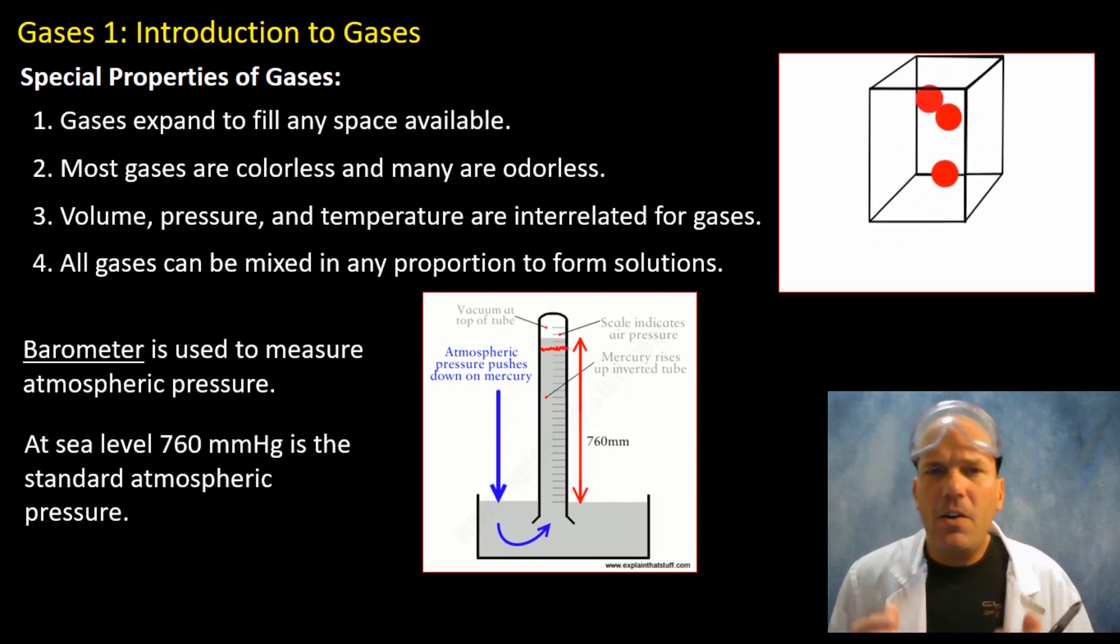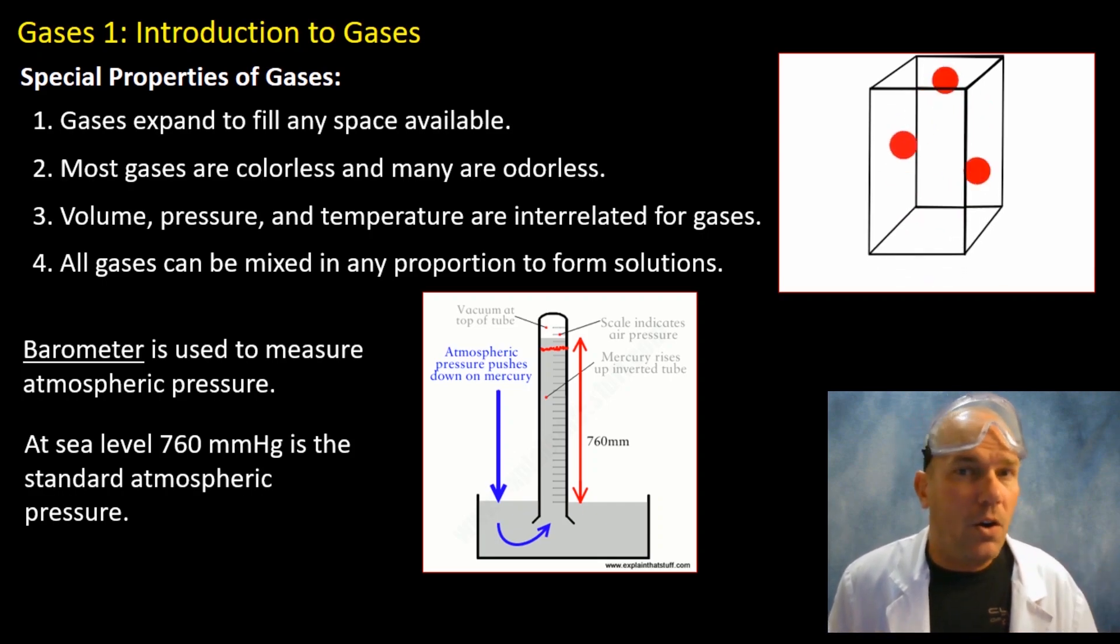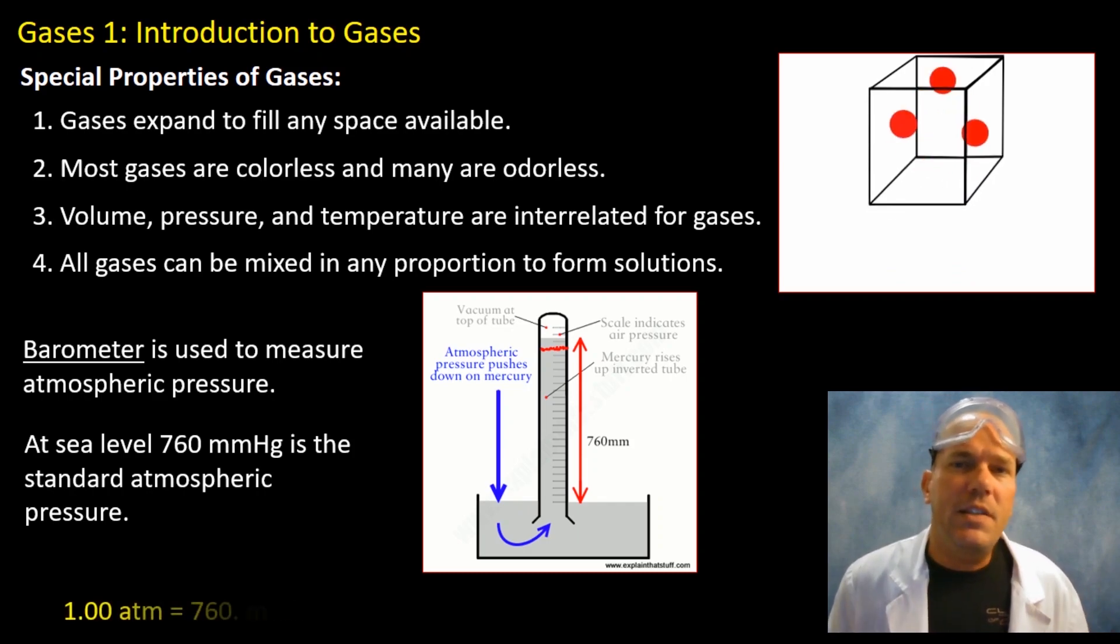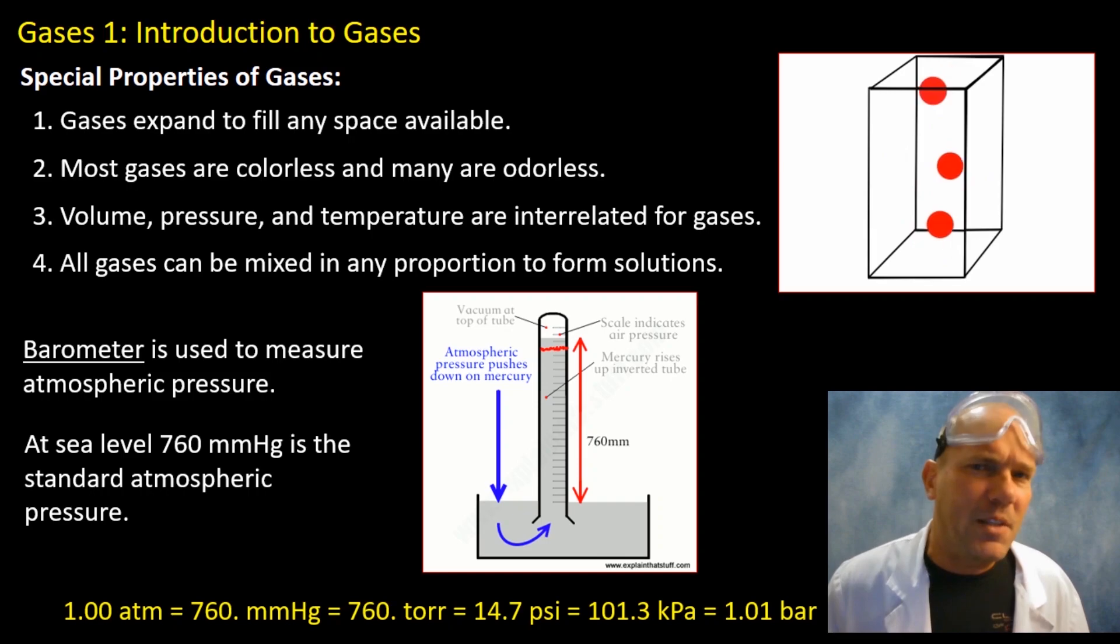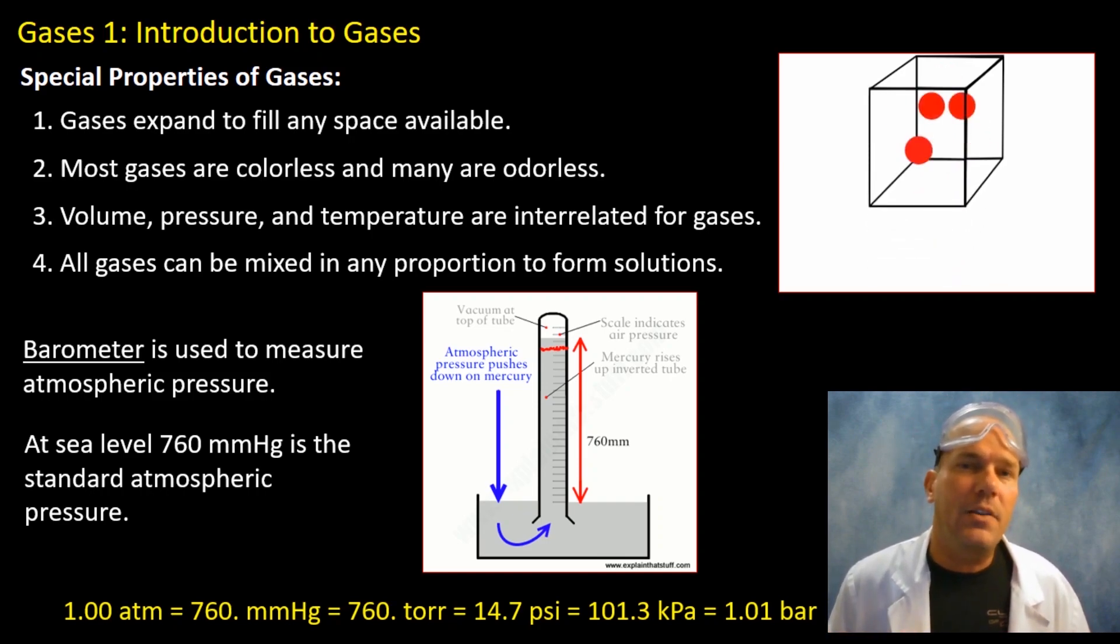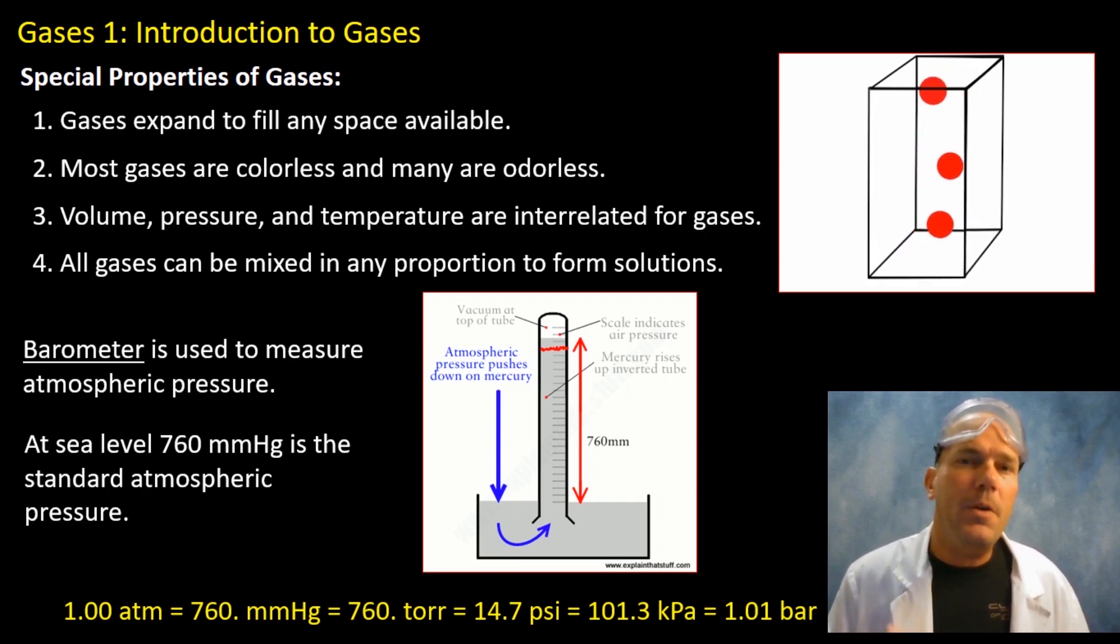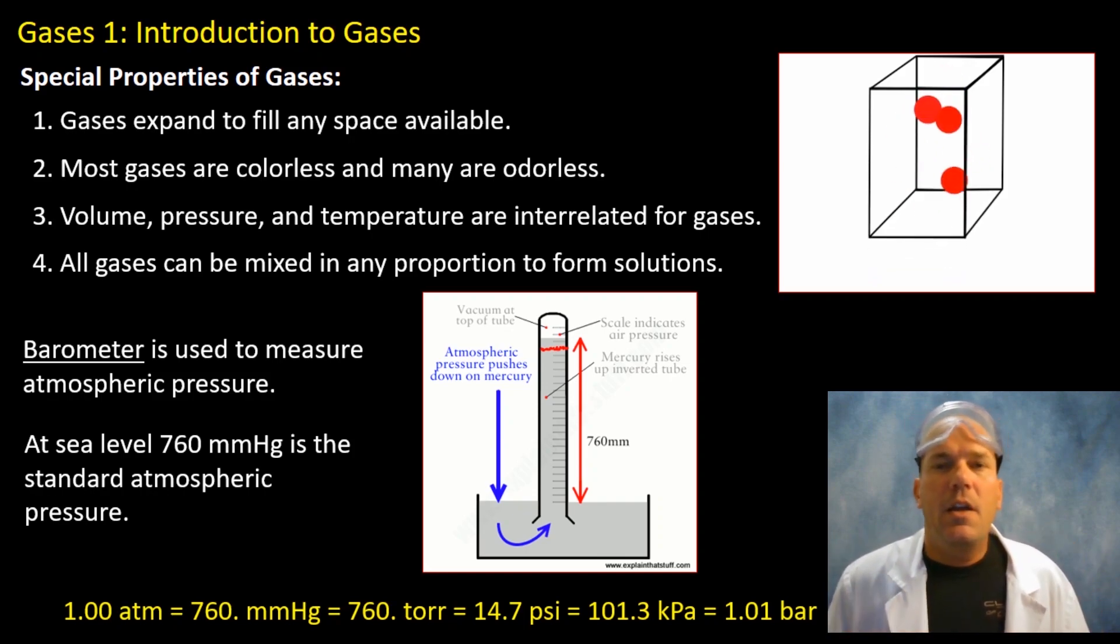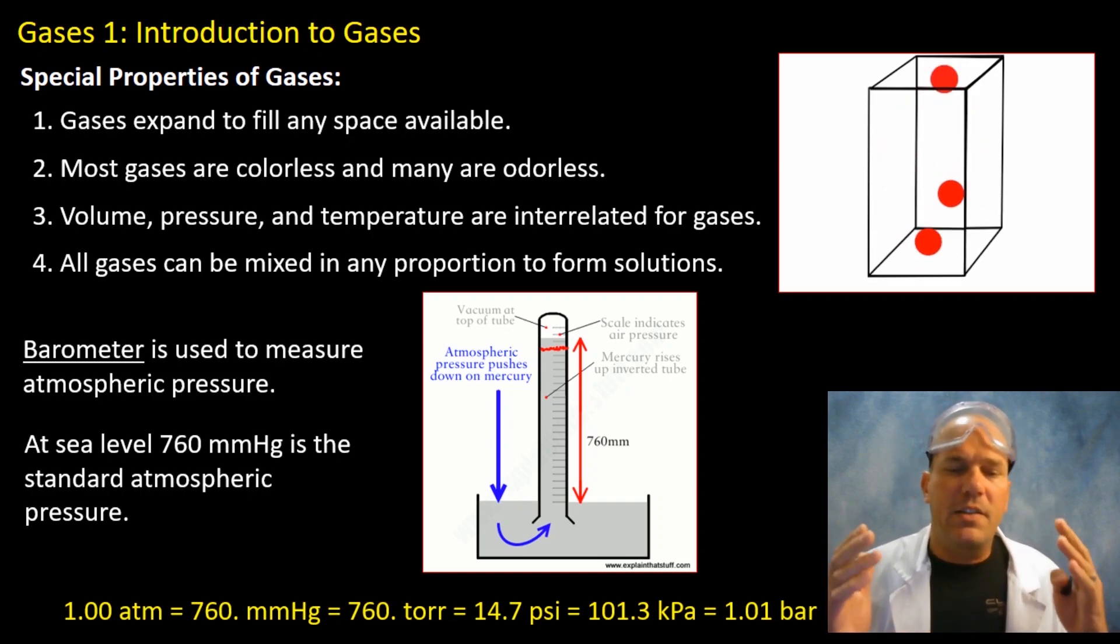And there are numerous units for pressure. You're going to be responsible for knowing all of these. So 760 millimeters of mercury is the equivalent of one atmosphere of pressure. Now that's something you're familiar with because we've talked about standard temperature and pressure, and we talked about the standard pressure being one atmosphere.